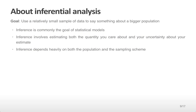The next kind of analysis is an inferential analysis. Here the goal is to use a relatively small sample of data to say something about a much bigger population. Inference is the most common goal of statistical models and it's the main target of instruction in most statistical classes. Inference involves both estimating the quantity that you care about for a population based on a small sample and being able to quantify the uncertainty that you have about that estimate. Inference depends heavily both on the population that you care about and the way that you've sampled that population.